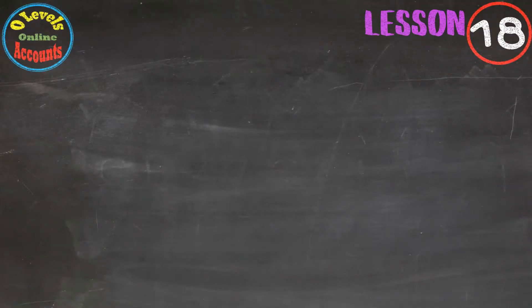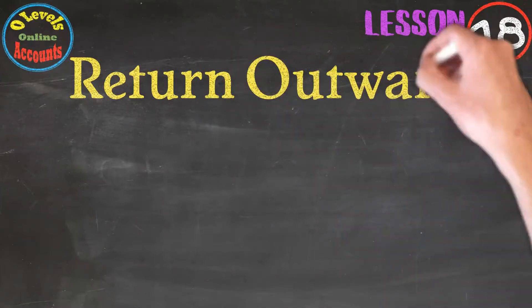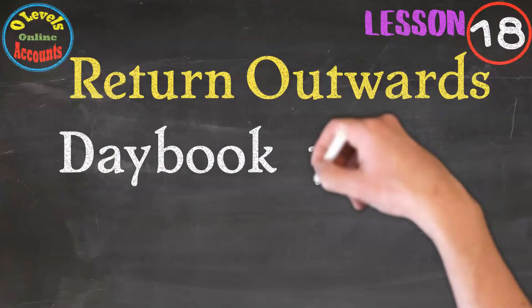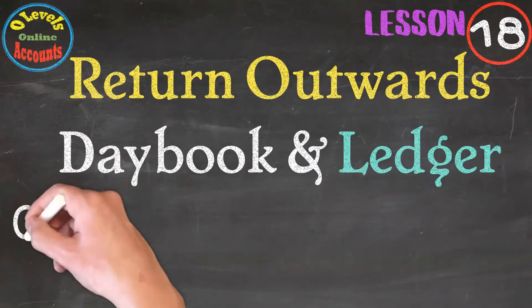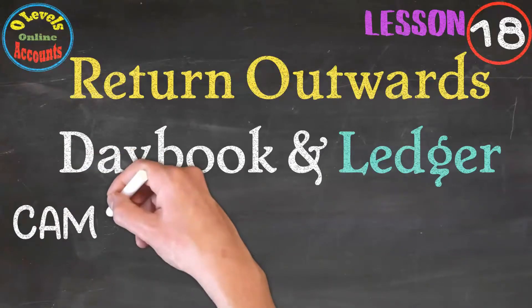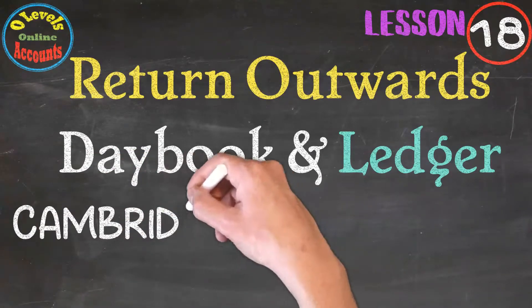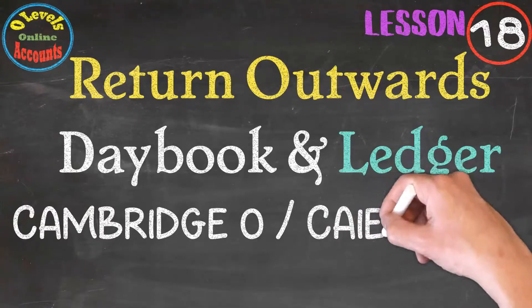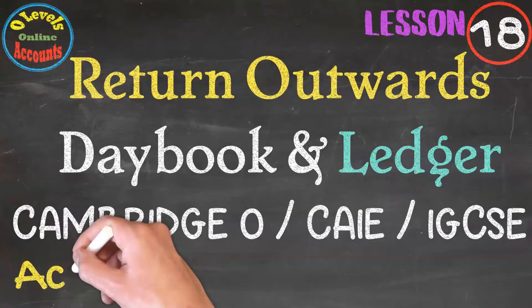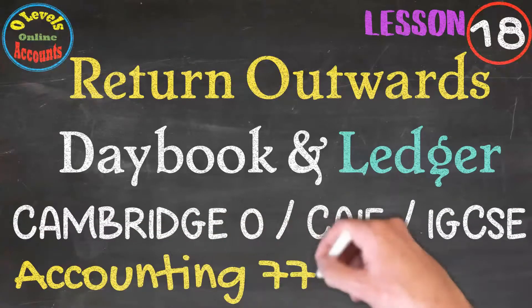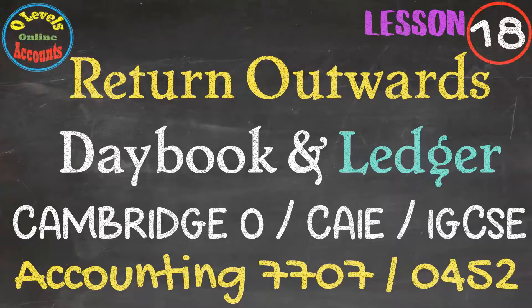Our students O-Level Online present the video lecture series for Books of Original Entry. In this video, we will discuss Return Outwards Daybook and Ledger. This video series is helpful for those students who are appearing in Cambridge O-Levels upcoming exams, either in June or November, through CAIE or IGCSE for Accounting 7707 or 0452. Let's begin the lesson material.